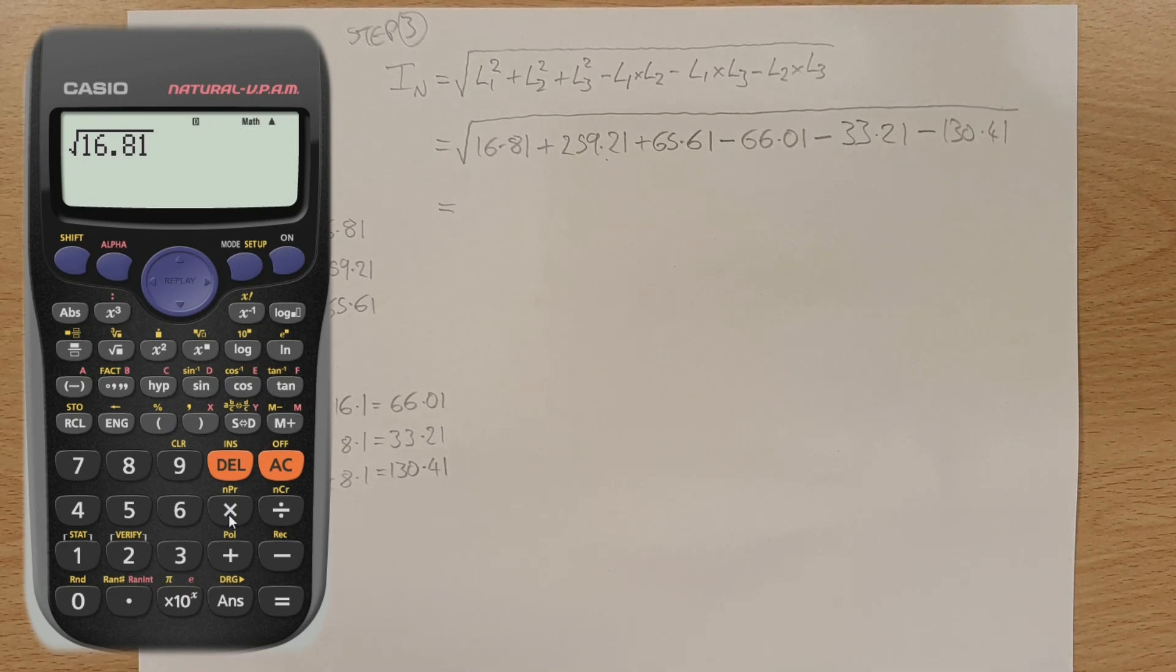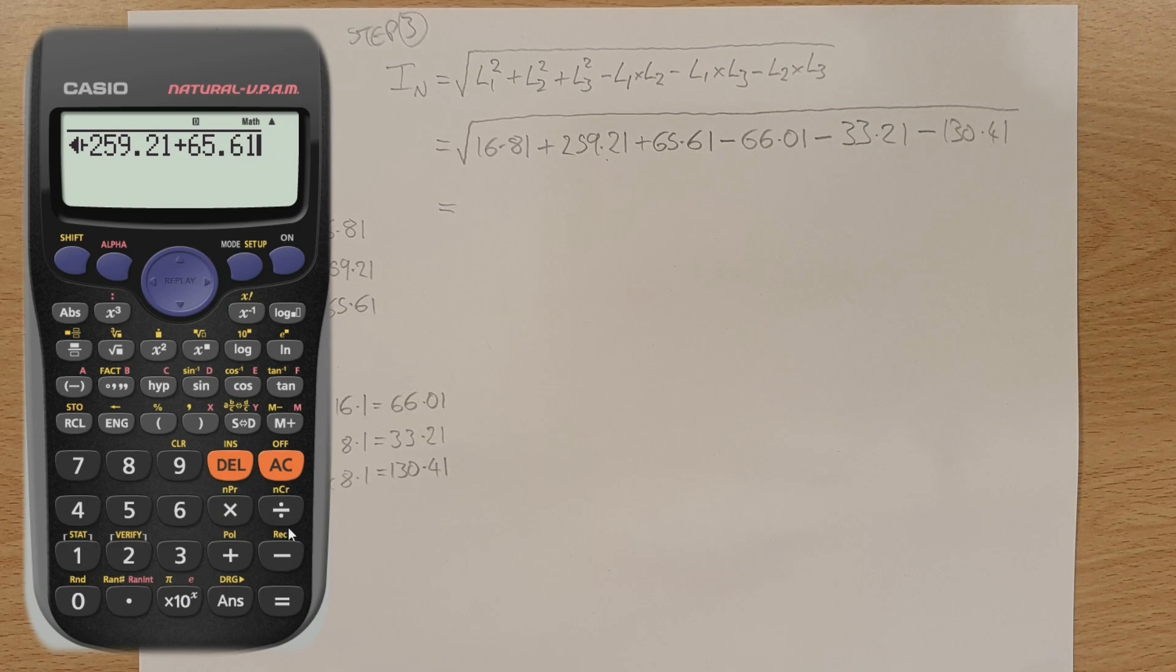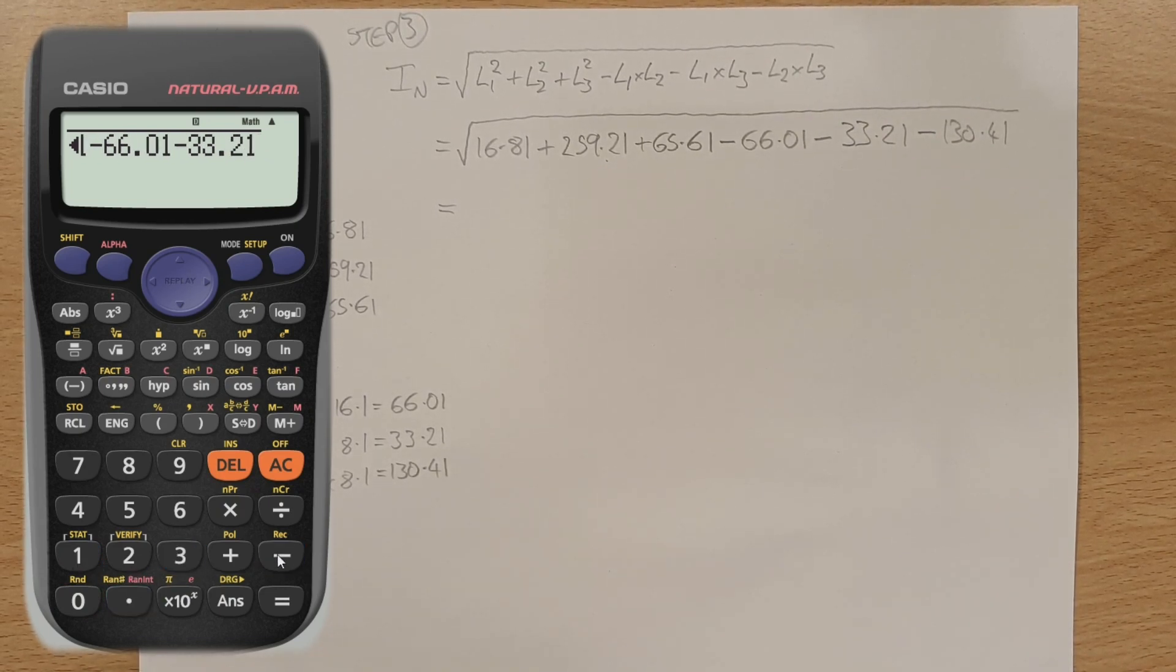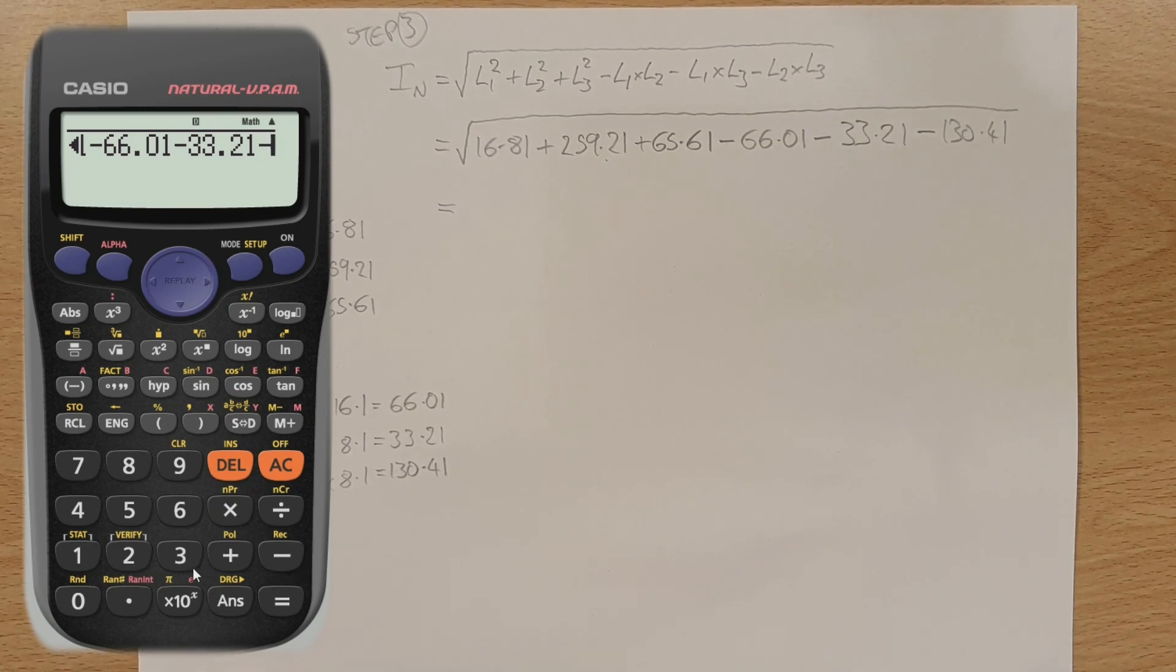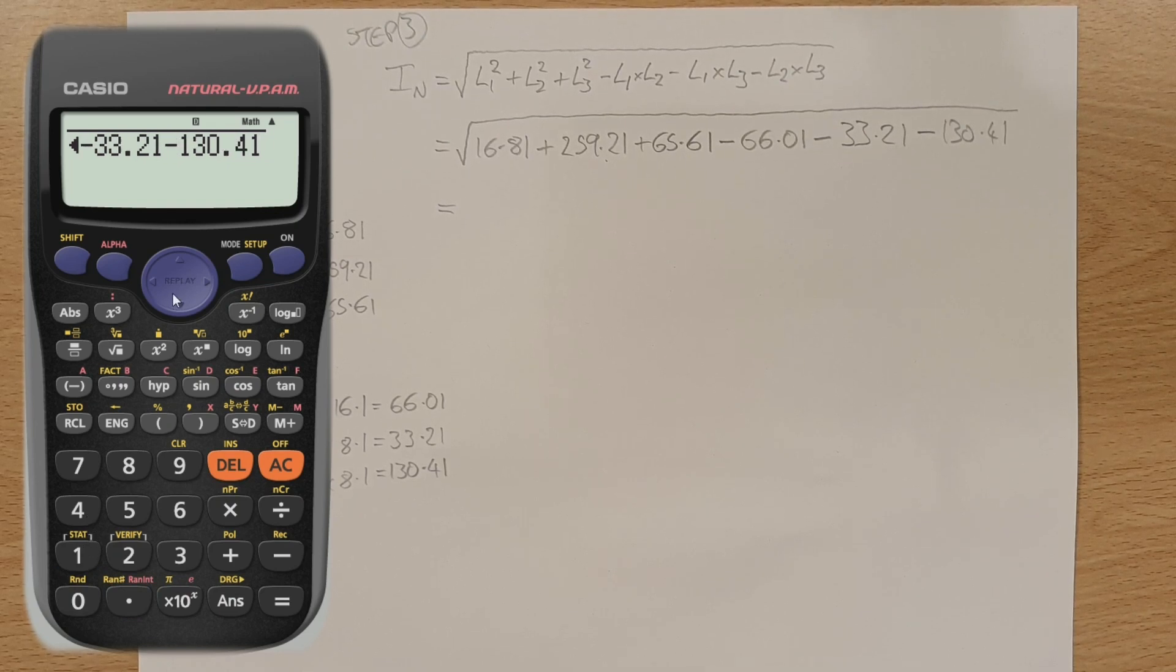And then we're going to add 259.21. And then we're going to add 65.61. And then we're going to subtract 66.01. And we're going to subtract 33.21. And then we're going to subtract 130.41. 130.41. So there you can see, there's our massive long string of adding and subtracting all square rooted.